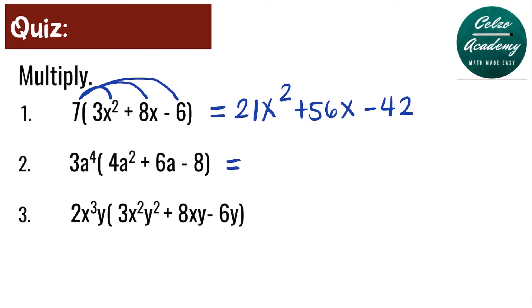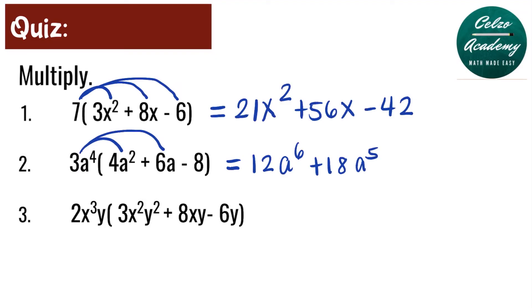Question number 2: 3a to the 4th times 4a squared plus 6a minus 8. First, multiply 3a to the 4th times 4a squared: 3 times 4 is 12, and a to the 4th times a to the 2nd is a to the 6th by adding the powers 4 and 2. Next, multiply 3a to the 4th and 6a: 3 times 6 is 18, and a to the 4th times a to the 1st is a to the 5th. Finally, 3a to the 4th times negative 8: 3 times negative 8 is negative 24. So the answer for number 2 is 12a to the 6th plus 18a to the 5th minus 24a to the 4th.